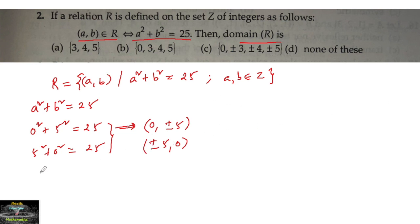In the next case, we can consider 3² + 4² = 25, or 4² + 3² also equals 25.